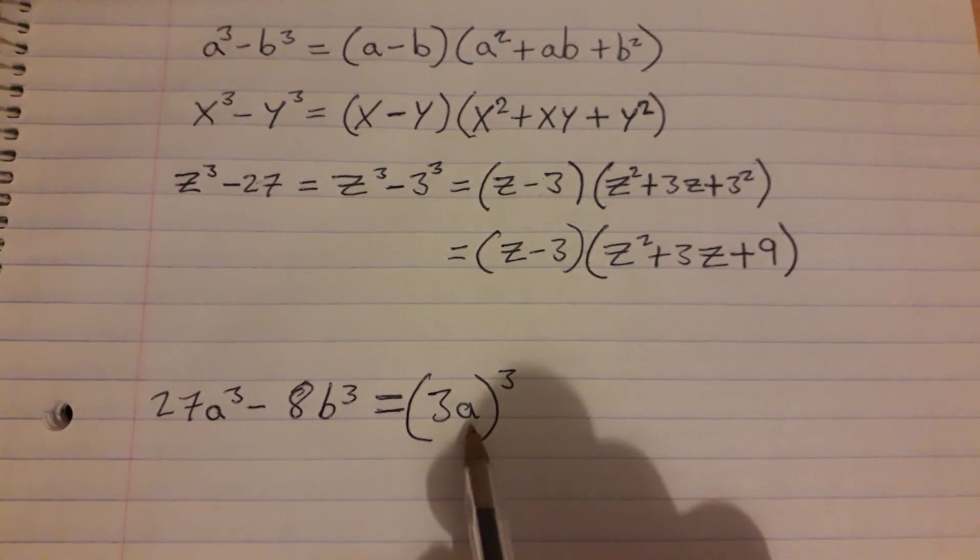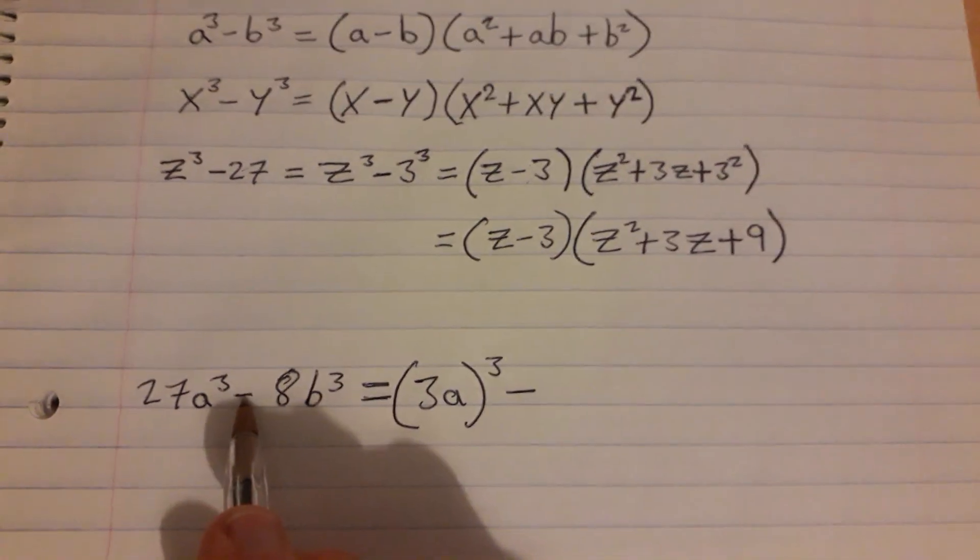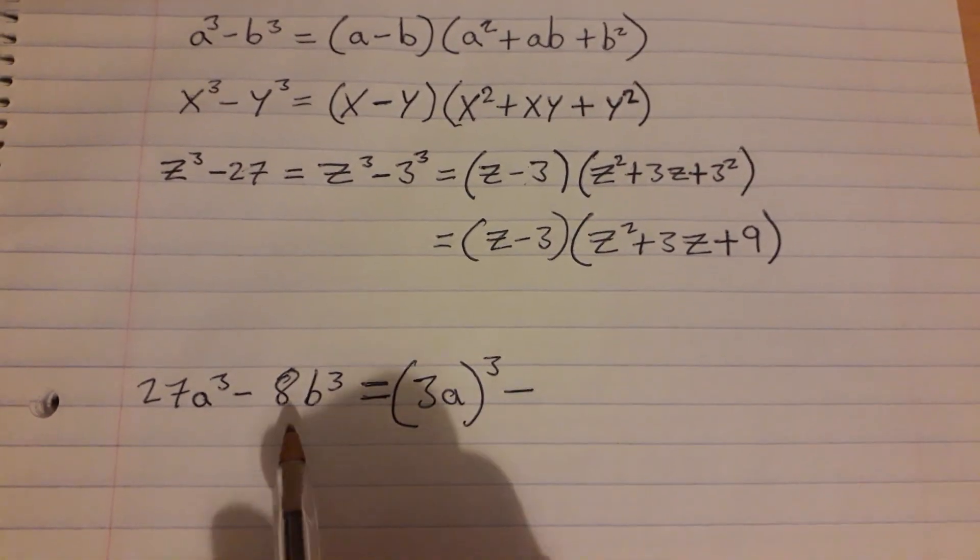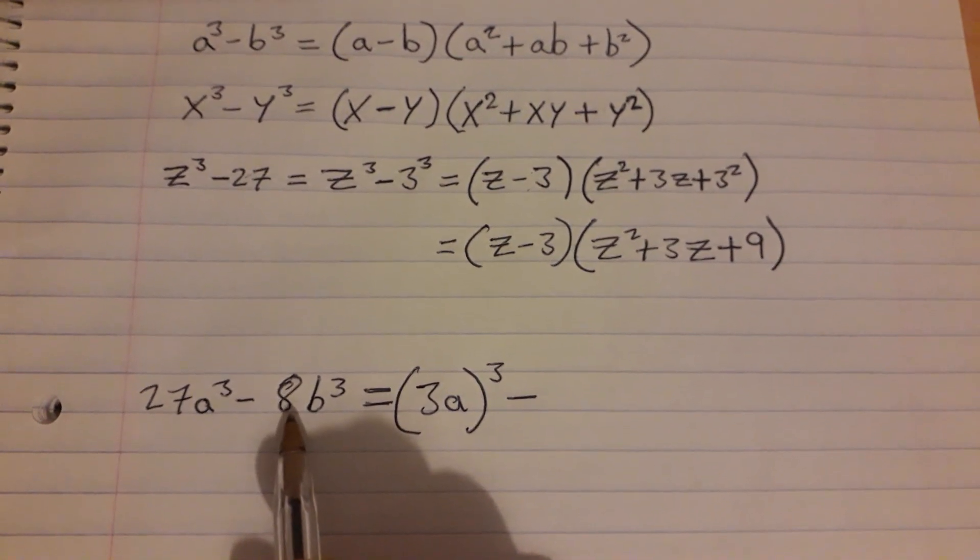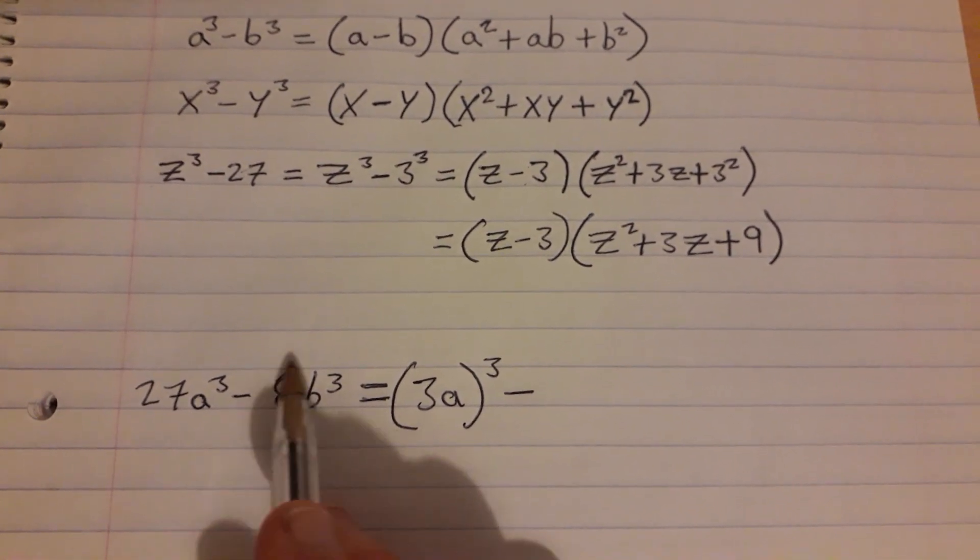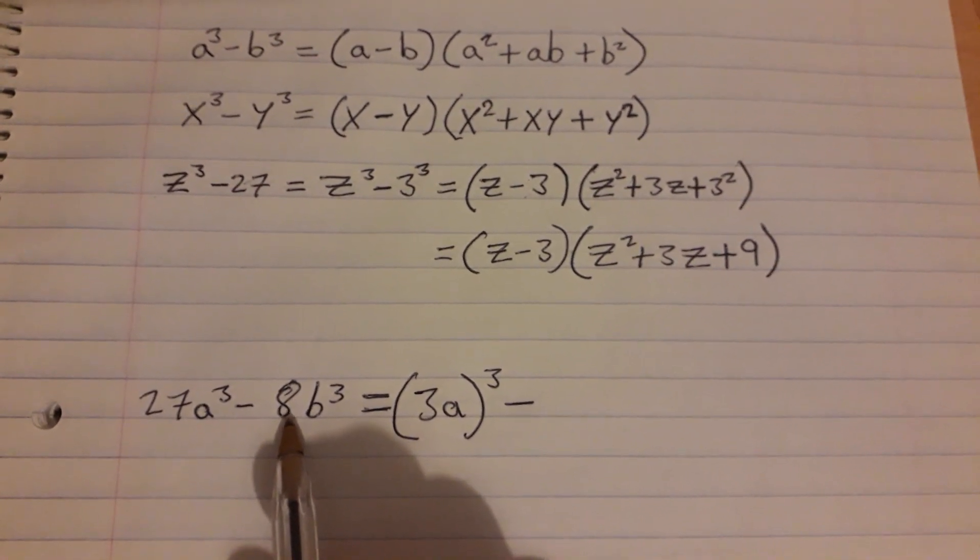Then this similarly, we look for the cube root of 8, and the number which you multiply by itself and again by itself to give you 8 is 2. 2 by 2 is 4 and multiply by 2 again, 2 fours are 8.